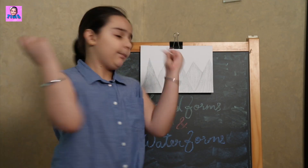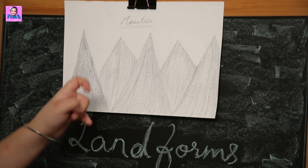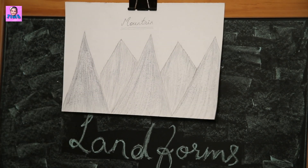Moving on is mountain. Mountains are the very tall and high places on the earth. They are taller than a hill. As you can see, the mountains look taller than hills. Example: Himalaya mountains. As you all might know, the Himalaya mountains are one of the tallest mountains on the earth.